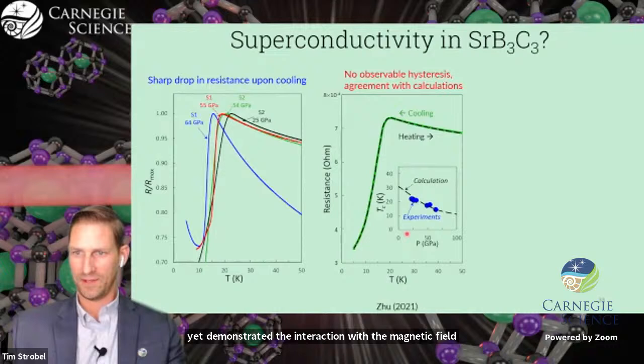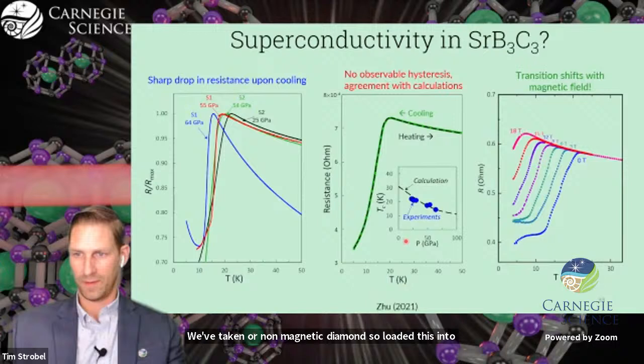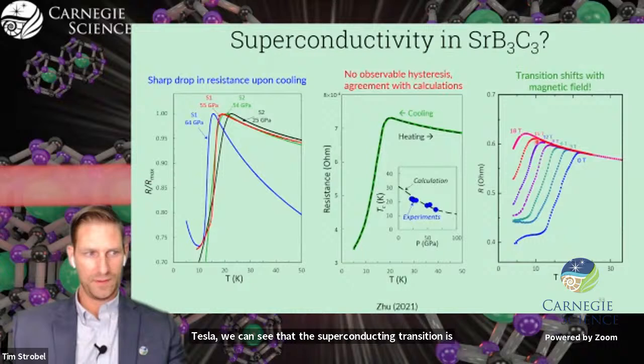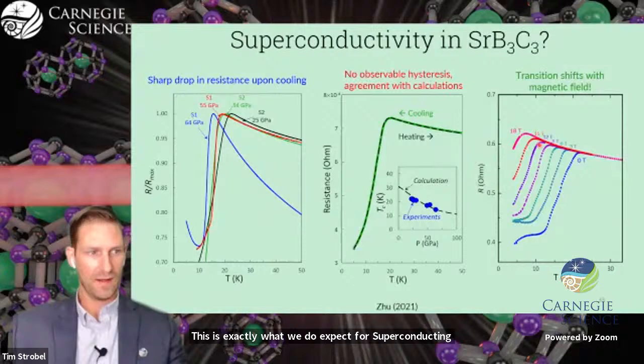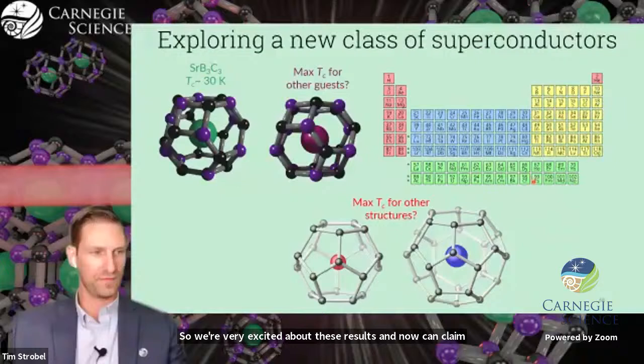We've taken our non-magnetic diamond cell, loaded this into a magnet, and performed the same experiments. With increasing magnetic field from zero Tesla to 18 Tesla, we can see that the superconducting transition is suppressed with increasing field. This is exactly what we'd expect for superconducting behavior as increasing magnetic field destroys superconductivity up to a critical field, at which point superconductivity completely vanishes.